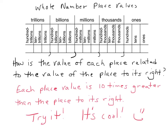How is the value of each place related to the value of the place to its right? Each place is ten times greater than the place to its right. So if I had a one in the tens column, that one is exactly ten times greater than a one in the ones column. If I put a five in the tens and a five in the ones, those five tens are exactly ten times more than five ones. Five times ten is fifty — it's just cool math stuff.